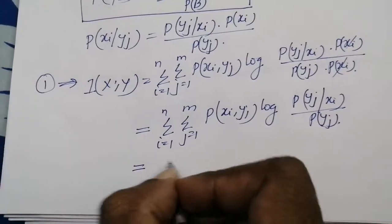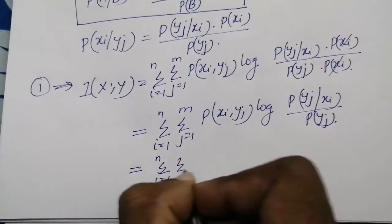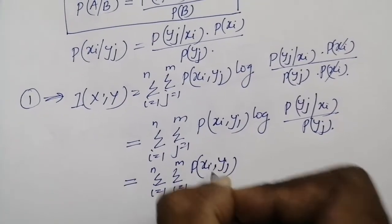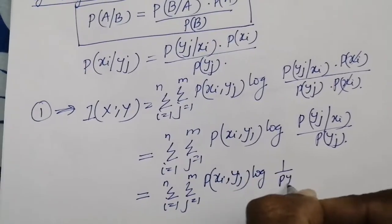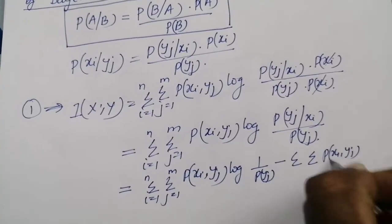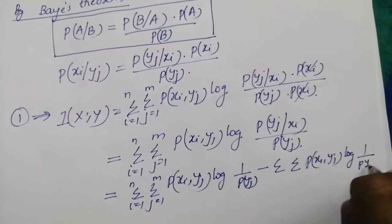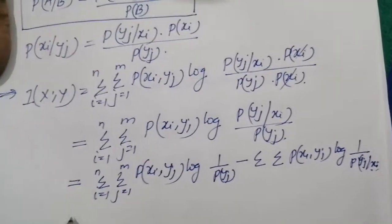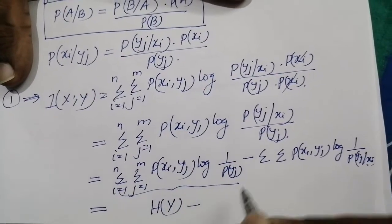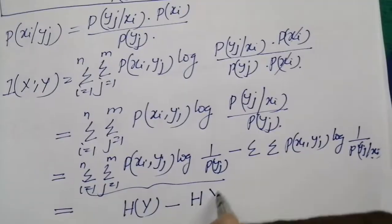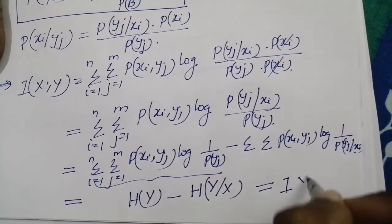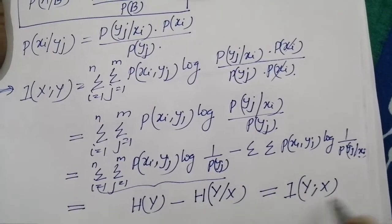This can be written as the double summation over i and j of p(xi,yj) log(1/p(yj)) minus the double summation of p(xi,yj) log(1/p(yj|xi)). The first term equals h(y) and the second term equals h(y|x), so I(x;y) = h(y) - h(y|x) = I(y;x), hence the proof.